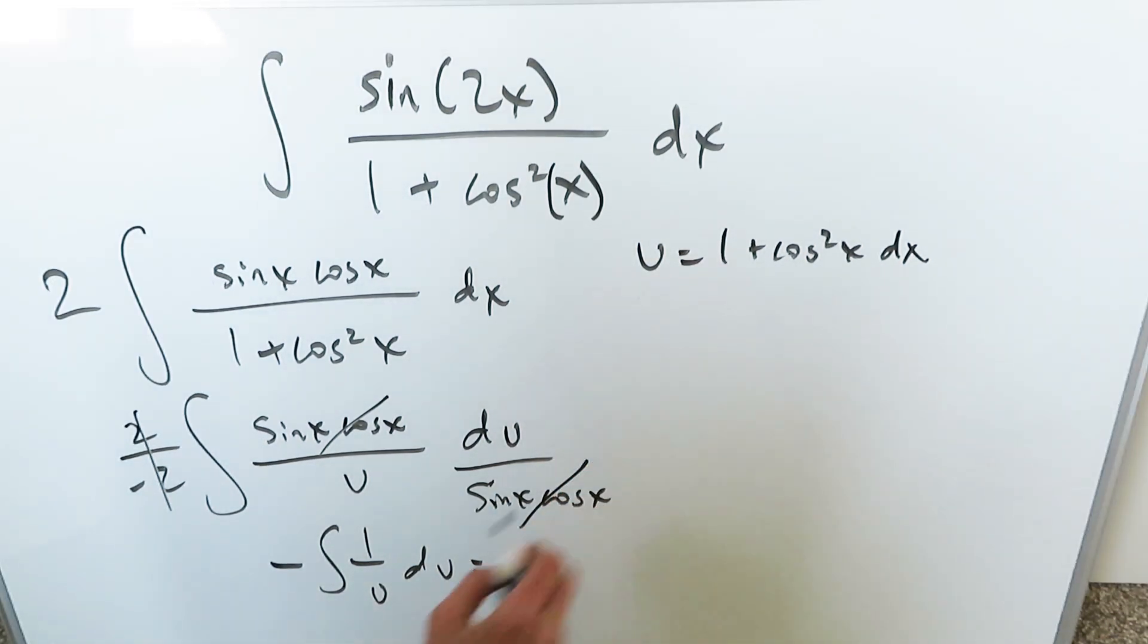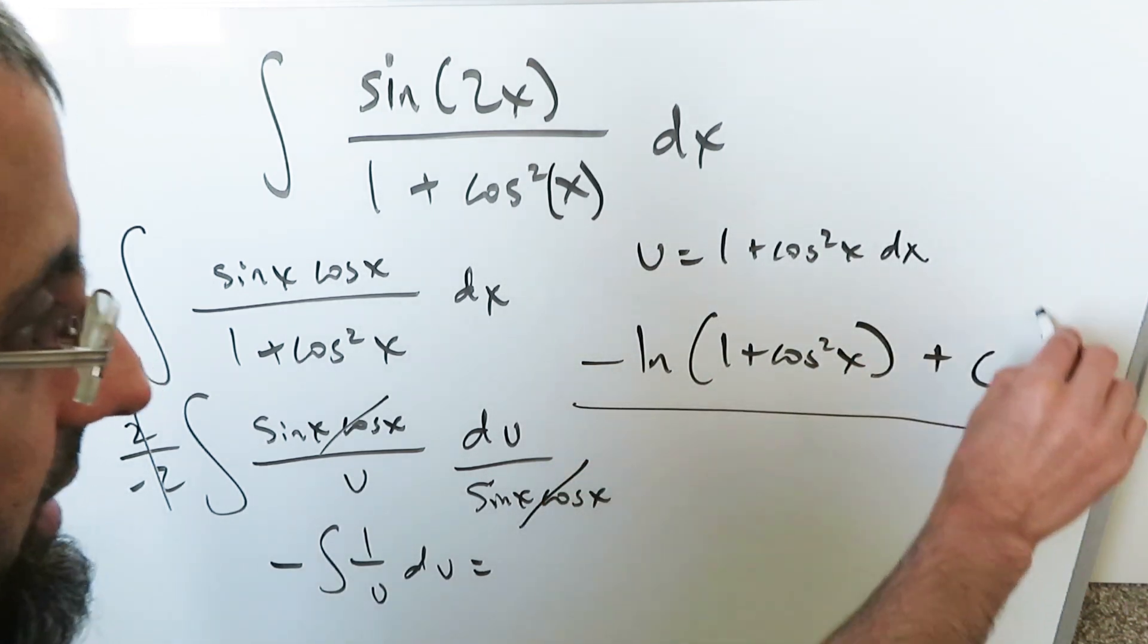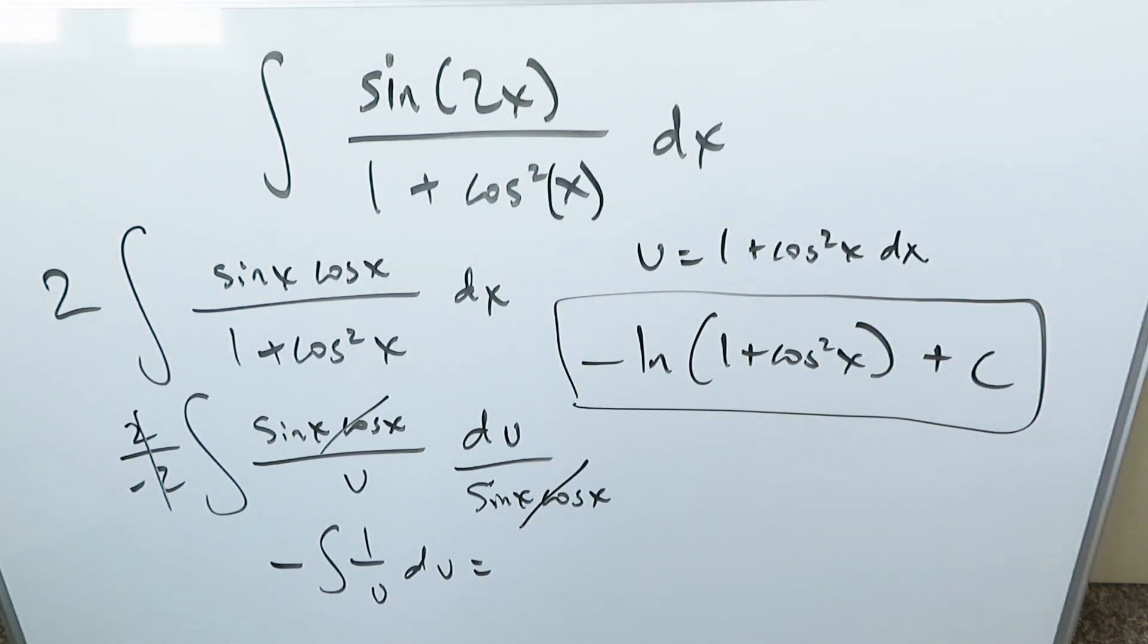When you bring in the u substitution and the anti-derivative, it will be end result minus natural log 1 plus cosine squared x plus c. Here is our end result and it should be right. And that's it for this video.